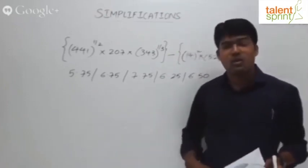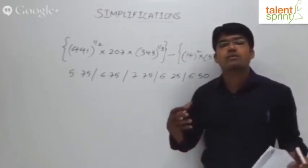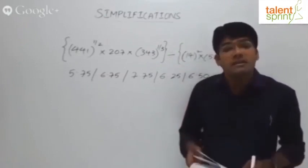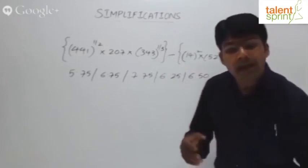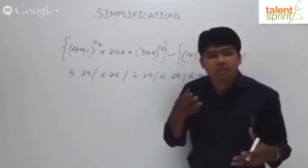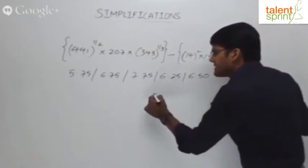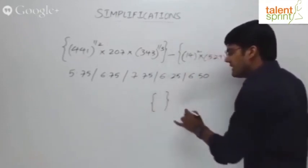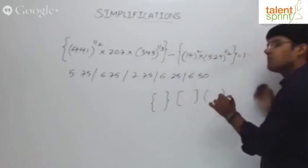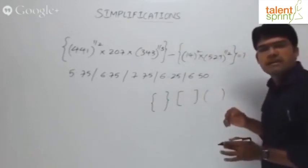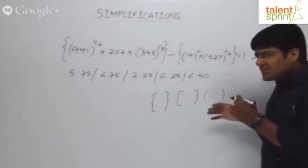What does the rule say? First, always go for the bracketed part. You have to simplify what is within the brackets. Now here we have different brackets. Remember, within brackets there is also some hierarchy that we need to follow. For example, there are different brackets: flower brackets, square brackets, and curved brackets.